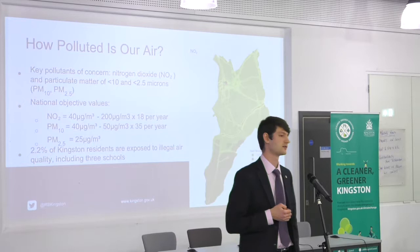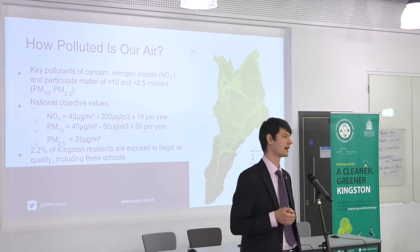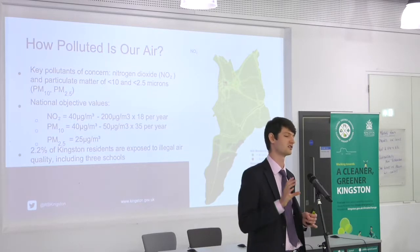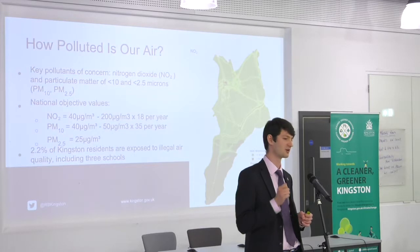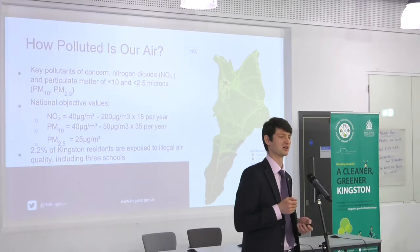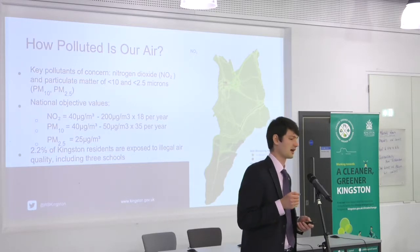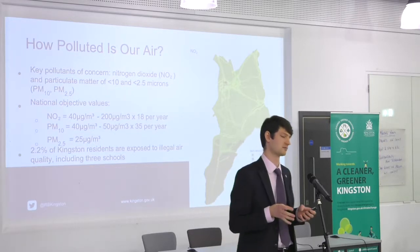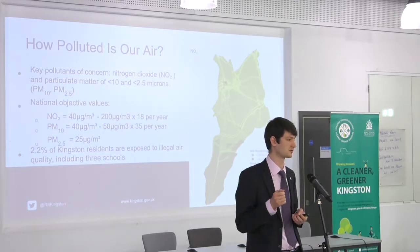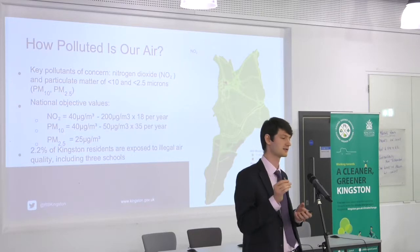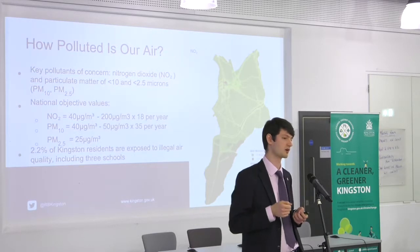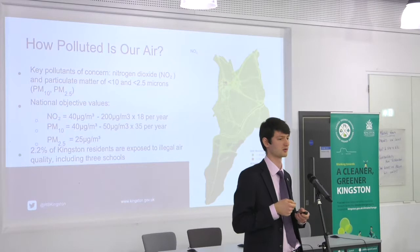In Kingston we've got two key pollutants of concern: nitrogen dioxide and particulate matter, which we subdivide into PM10 and PM2.5. PM obviously means particulate matter and the number denotes the size of the particles — particulate matter is effectively very fine dust suspended in our atmosphere. PM10 means particles that are 10 microns or smaller in diameter; PM2.5 is 2.5 microns or smaller.